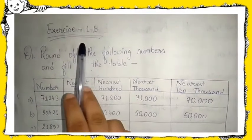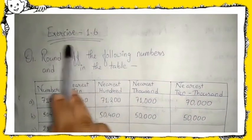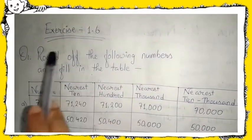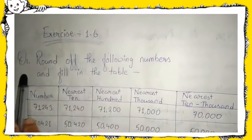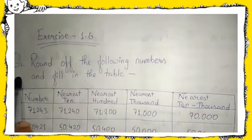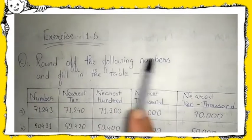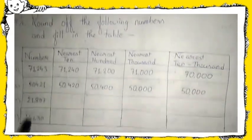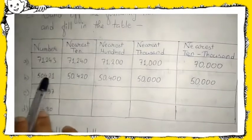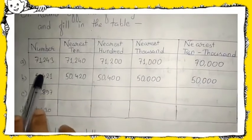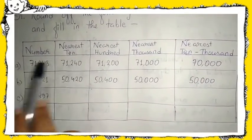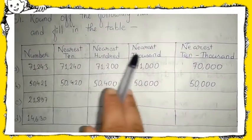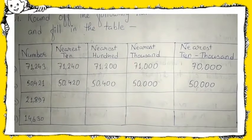Hello students, today we will do the last exercise of chapter 1, that is Exercise 1.6. In this exercise, your first question is to round off the following numbers and fill in the table, as we have explained in an earlier video about how to round off numbers to the nearest tens, hundreds, thousands, and ten thousands.